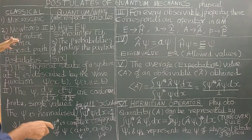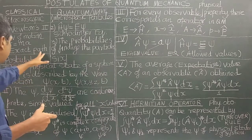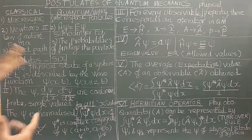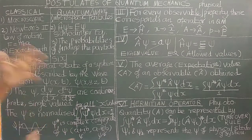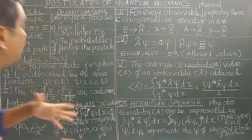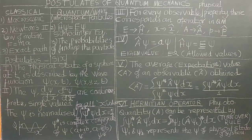In classical mechanics, the exact path and exact trajectory of the particle can be followed and studied. Whereas in quantum mechanics, we cannot follow the exact path of the electron. We only get the probabilities of finding the electron or particles in the atom or in a physical state.